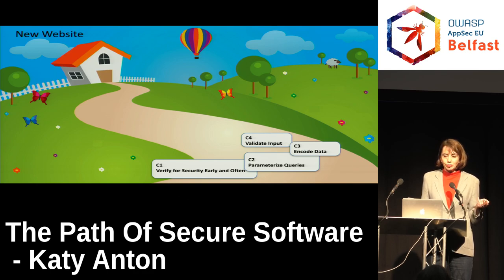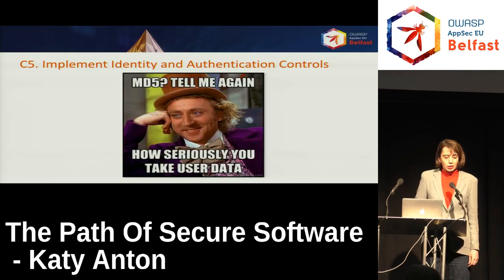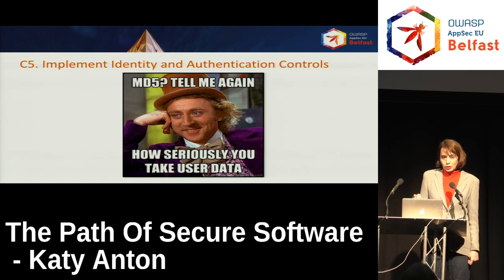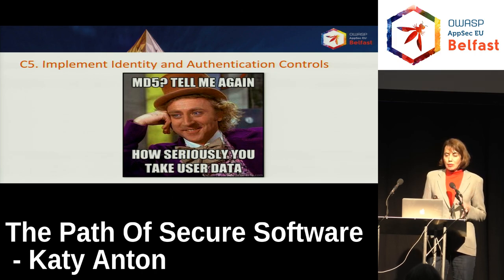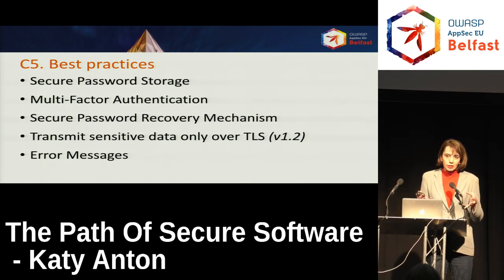Our website, like many applications, has a section available to everybody and a section restricted to certain users. For this we have control number five: identity and authentication controls. When it comes to authentication, this can be a complex security control. Some best practices include: implement secure password storage, use multi-factor authentication, have a secure password recovery mechanism in place, and transmit any sensitive data via TLS — ideally 1.2.